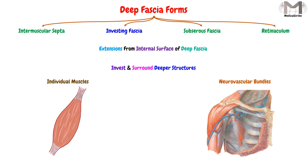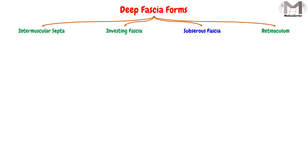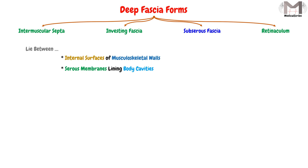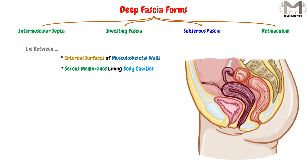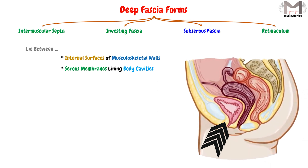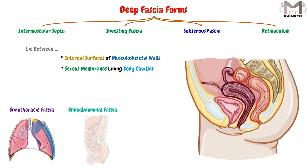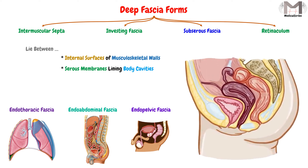The third form of the deep fascia is the sub-serous fascia. This form lies between the internal surfaces of the musculoskeletal walls and the serous membranes lining the body cavities. For example, if we have two structures, one on the left and one on the right, these structures will be lined by a serous membrane, and the space between these membranes will be filled by this sub-serous fascia. Examples include the endothoracic fascia, the endo-abdominal fascia, and the endo-pelvic fascia.